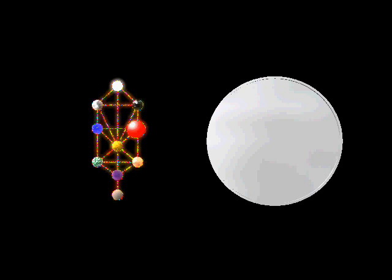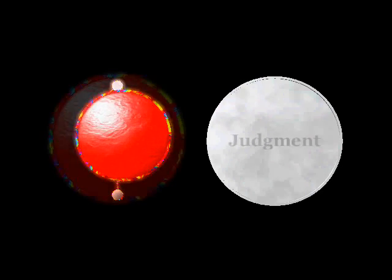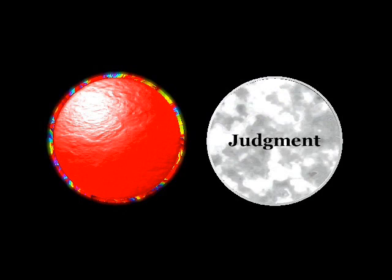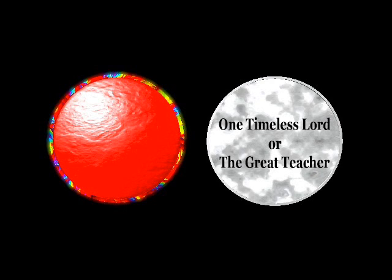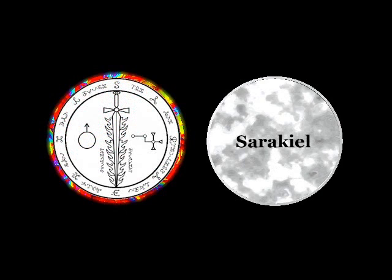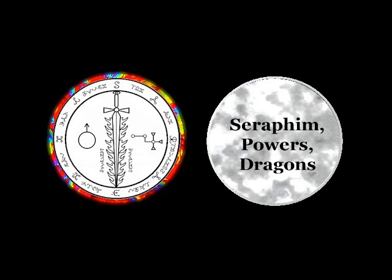Sephirah Gibburah. Title: Judgment - Only God Can Judge. Divine Name: One Timeless Lord, or The Great Teacher, from Sikhism. Archangel Sorakiel. Angelic Order: Seraphim, Powers, Dragons.